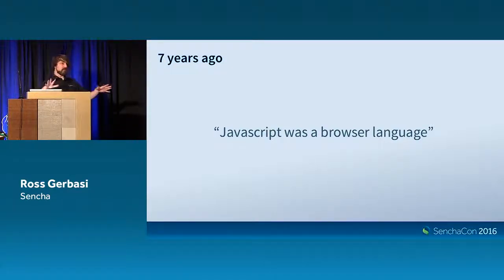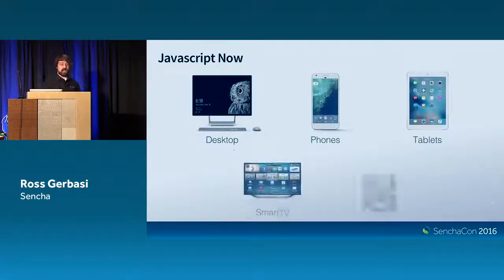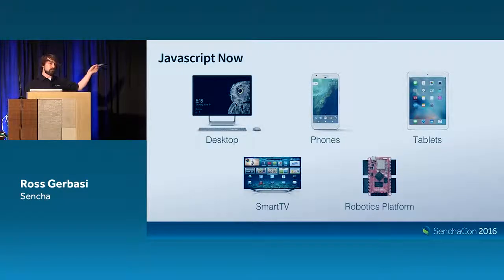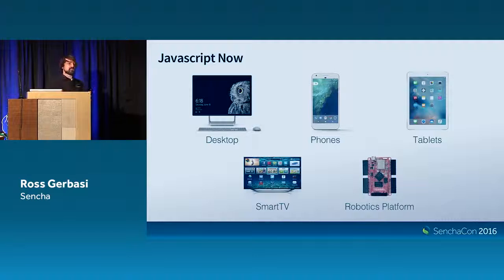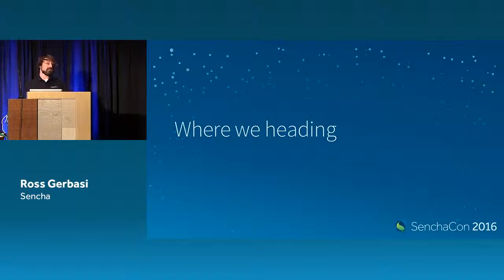Seven years ago, JavaScript was a browser language — it lived in the browser, that's where we were. Where are we now? It's a much different world. We have desktop, phones, tablets, smart televisions. Even tiny microcontrollers and robotics platforms are running JavaScript normally. Every single thing here runs JavaScript in some way for an application. Times have changed considerably for the world, JavaScript, and developers.